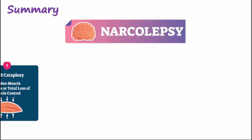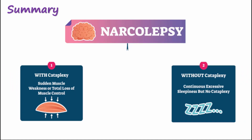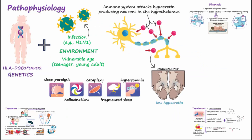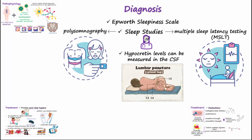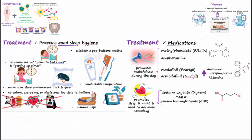In summary, narcolepsy type 1 is with cataplexy, and narcolepsy type 2 is without cataplexy. Certain genes, susceptible to age and infection, may trigger immune cells to attack the hypocretin-producing neurons in the hypothalamus. Loss of these neurons leads to symptoms including hypersomnia, fragmented sleep, cataplexy, hallucinations, and sleep paralysis. The Epworth sleepiness scale and sleep studies are important in diagnosis. Treatment involves practicing good sleep hygiene and medications that promote wakefulness during the day and sleep at night.